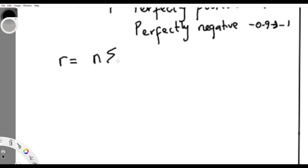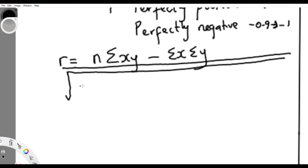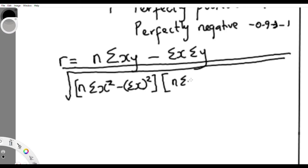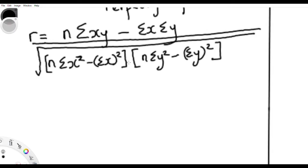The formula for R is: R equals n times summation XY minus summation X times summation Y, all over the square root of n times summation X-squared minus summation X all squared, multiplied by n times summation Y-squared minus summation Y all squared. This is the Pearson correlation coefficient.